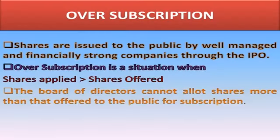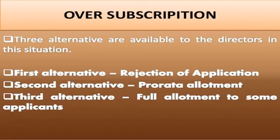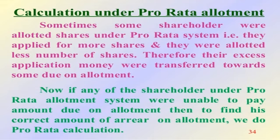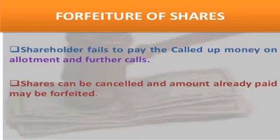Oversubscription: shares are issued to the public by a well-managed and financially strong company through the IPO. Oversubscription is a situation when shares applied is greater than shares offered; the board of directors cannot allot shares more than that offered to the public. Three alternatives are available to the directors in this situation: first alternative — rejection of application; second alternative — pro-rata allotment; third alternative — full allotment to some applicants. Under pro-rata allotment, some shareholders were allotted less shares than they applied for; their excess application money was transferred towards amount due on allotment. If any shareholders under pro-rata allotment were unable to pay the amount due on allotment, then to find the correct amount of arrear on allotment, we do pro-rata calculation.